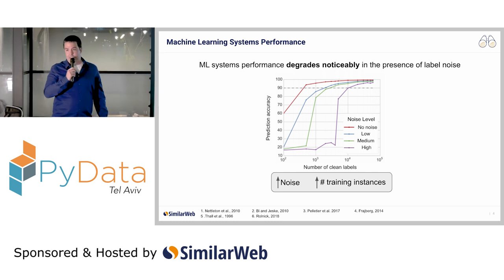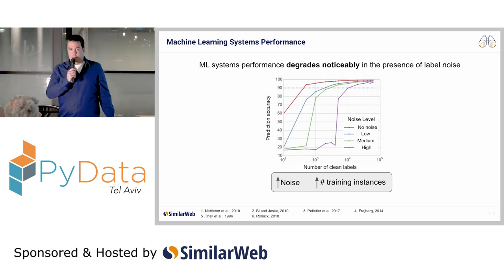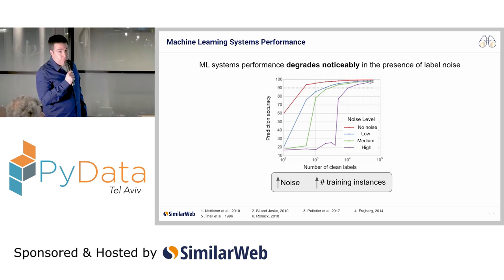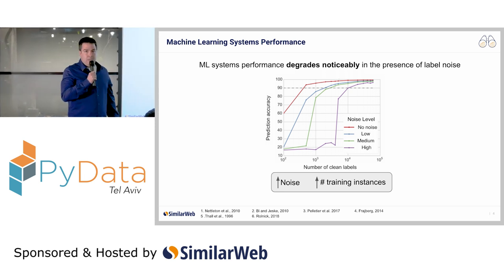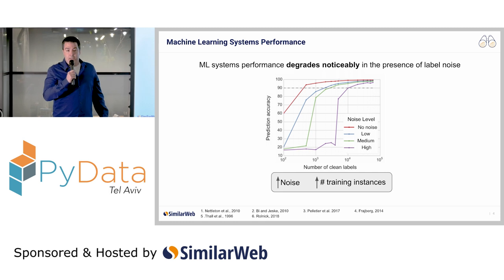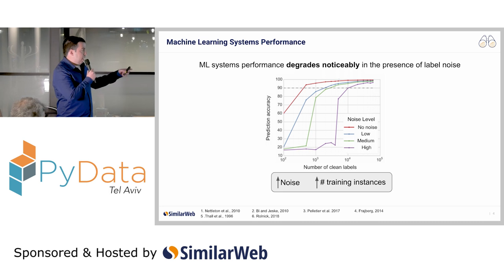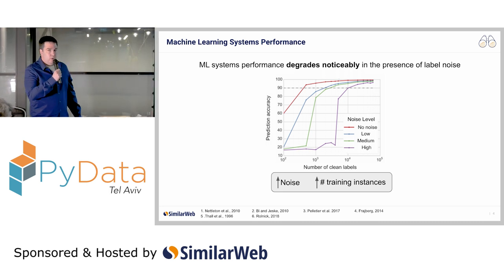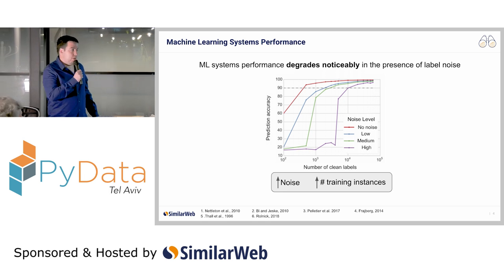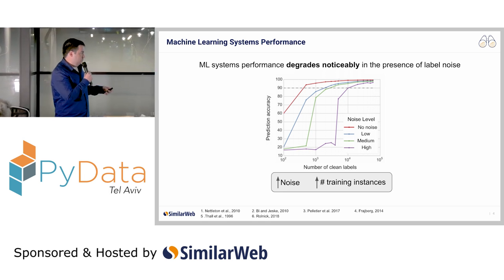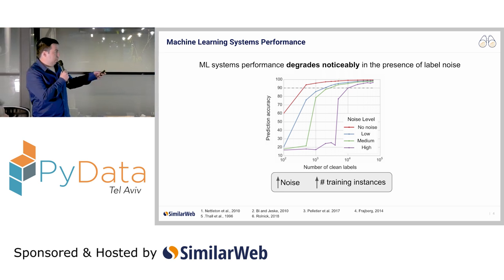Unfortunately, this is not the only downside of label noise. Researchers have found additional downsides, such as difficulty in performing feature selection, a substantial increase in the complexity of learned models, and the need to increase the training data in order to produce the same task accuracy. Like the example on screen where researchers needed many more clean training instances in order to reach a 90% accuracy threshold in cases where the data was very noisy, in comparison to the noise-free baseline.